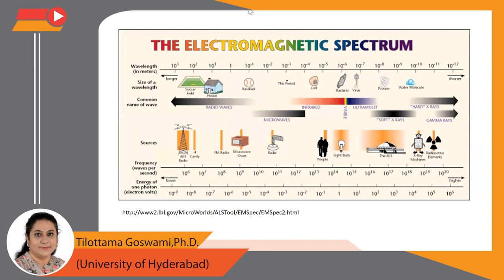The electromagnetic spectrum is defined by three basic factors: wavelength measured in meters, frequency measured in Hertz, and photon energy measured in electron volts. Depending on the wavelength and frequency, the EM spectrum is broadly classified into different groups — starting from right to left: gamma radiation, x-ray radiation, ultraviolet radiation, visible radiation, infrared, microwave radiation, and radio waves — moving from lower towards higher energy.